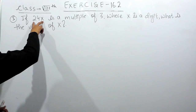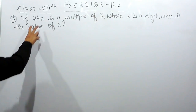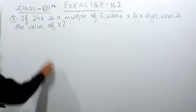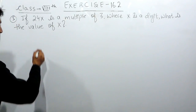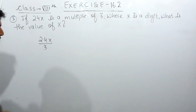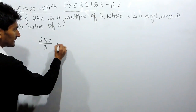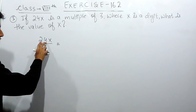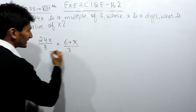You have to find the value of x for which this complete number is a multiple of 3. If this is a multiple of 3, it must be divided by 3 completely with no remainder. We know the divisibility rule of 3: to check if 2 4 x is divisible by 3, add the digits. If their sum is divisible by 3, the complete number is also divisible by 3. So 4 plus 2 is 6, meaning the sum of digits will be 6 plus x.